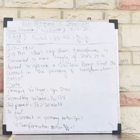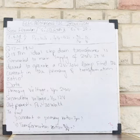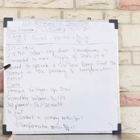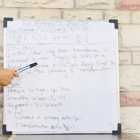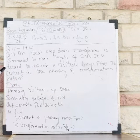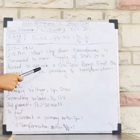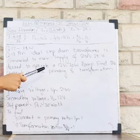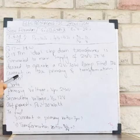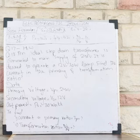Let's move to question number 18. An ideal step-down transformer is connected to a main supply of 240 volts. It is designed to operate a 12 volt, 30 watt lamp. Find the current in the primary and the transformation ratio.